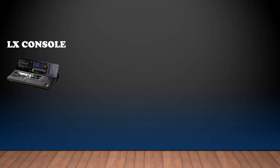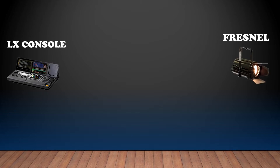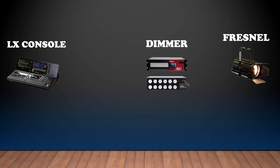So what is Signal Flow? Let's start with an example. We have a lighting console and we would like to control the intensity of a light. Let's say we have an incandescent for now. And as we already know, we plug incandescent lights into the dimmer. From the lighting console, we will connect a DMX cable from it to the dimmer.